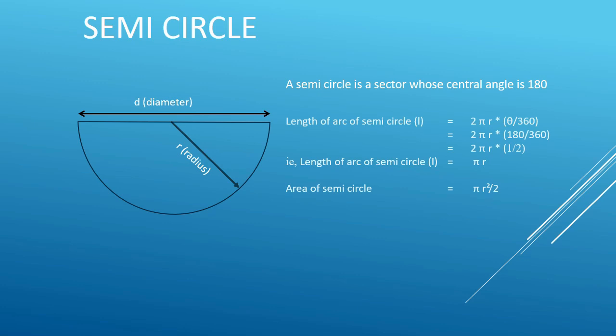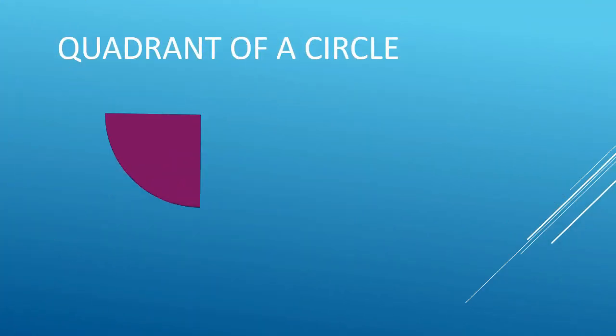The area of a semicircle is πr squared divided by 2. The perimeter of a semicircle is the length of arc of the semicircle, that is πr, plus the diameter, that is 2r. So the perimeter of a semicircle is r multiplied by (π plus 2).